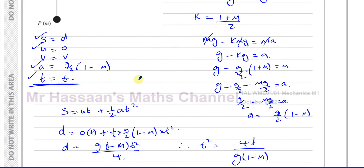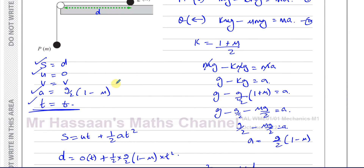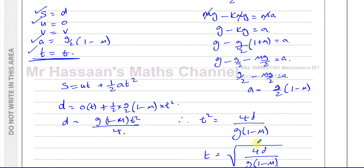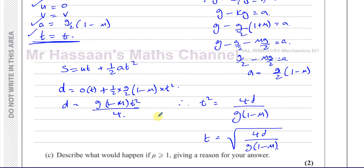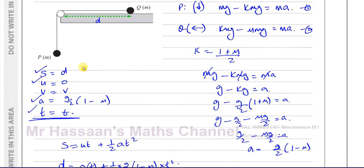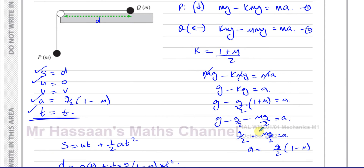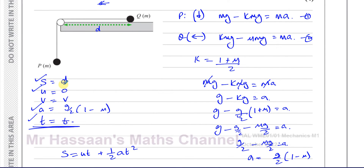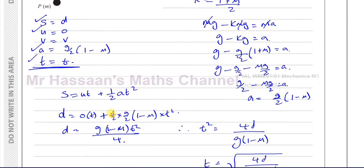That's the answer to part B. It's a very algebraic type of question — many students find that tricky, but it's just the same as working with numbers. We knew K from part A, used that to find acceleration in terms of G and mu, and then applied SUVAT with distance D to find the time.